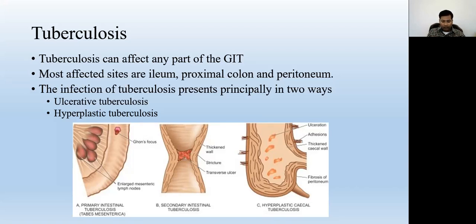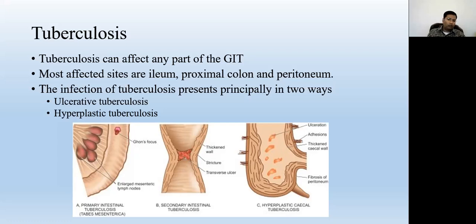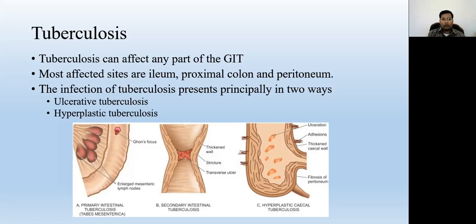Tuberculosis has a high incidence because it is a community-spread disease present in our environment. Patients with lower immunity and less body weight are more likely to get tuberculosis infection. There are principally two types of intestinal tuberculosis: ulcerative tuberculosis and hyperplastic tuberculosis. In ulcerative tuberculosis, the bacteria's virulency is high and the patient has lower immunity, causing small undermined ulcers in the intestine.